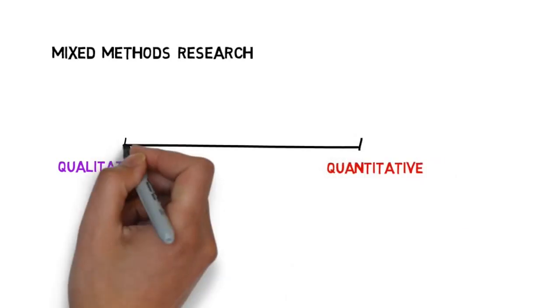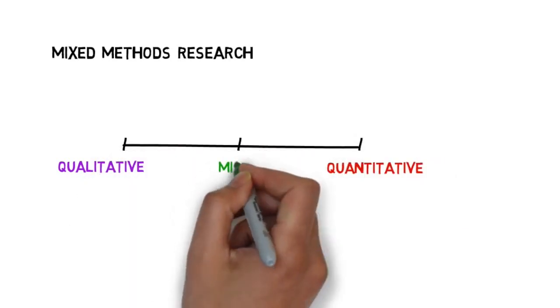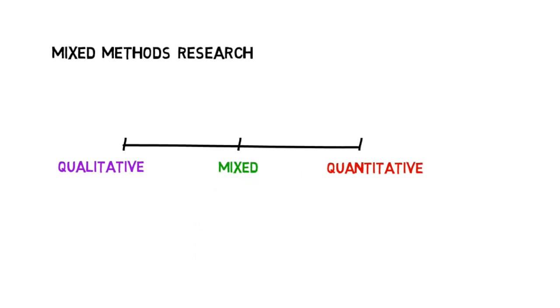Mixed methods research involves combining quantitative and qualitative research. It takes a more pragmatic approach whereby the type of research used should be based on what will best help you answer your research question. The research required will generally fit somewhere on this continuum.